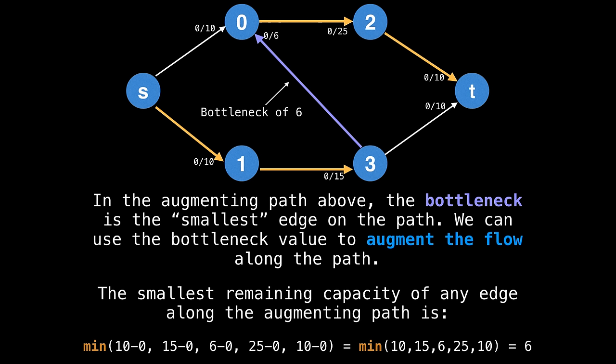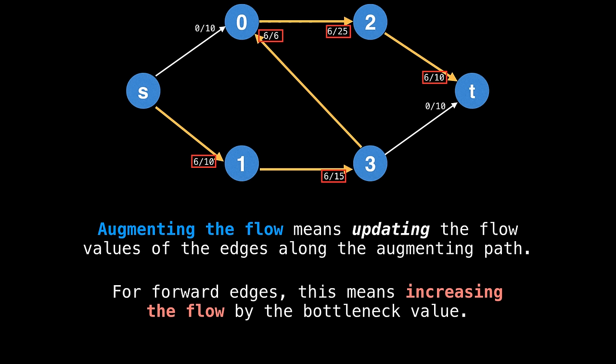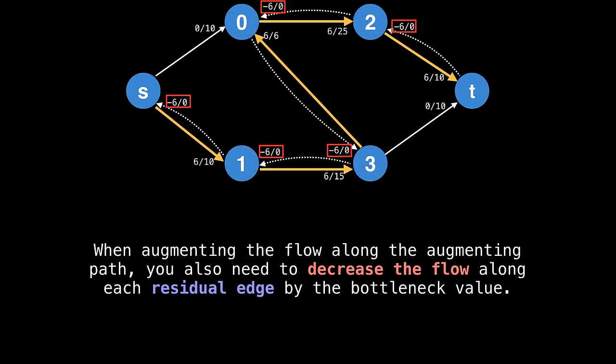For this augmenting path, the bottleneck value is six, we can use the bottleneck value to augment the flow along the path. Augmenting the flow simply means to update the flow values of the edges along the augmenting path. Here you can see that I've increased the flow of each edge along the augmenting path by exactly six units. However, we're not done augmenting the flow.